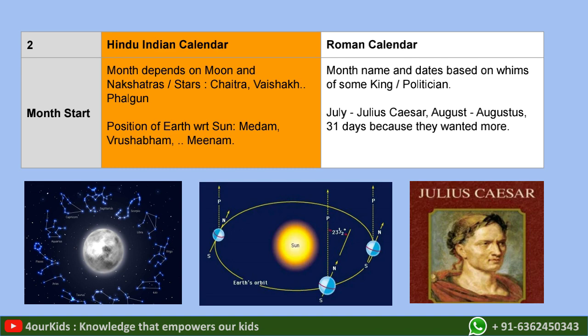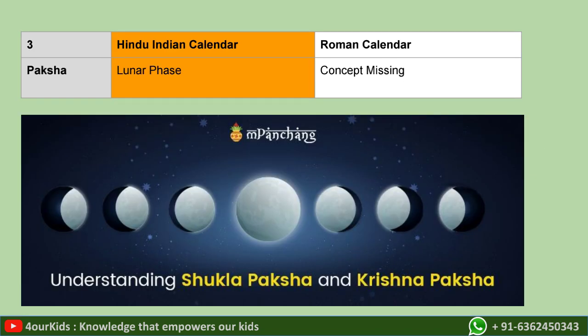Compare that with the Roman calendar, where the name of the month and the number of dates in that month is based on the whims of some king or politician. For example, Julius Caesar and Augustus wanted months named after them and both wanted 31 days because they felt they were more important — and thus we have fewer days in February. We have a concept missing from the Roman calendar called lunar phase, called Shukla Paksha or Krishna Paksha.